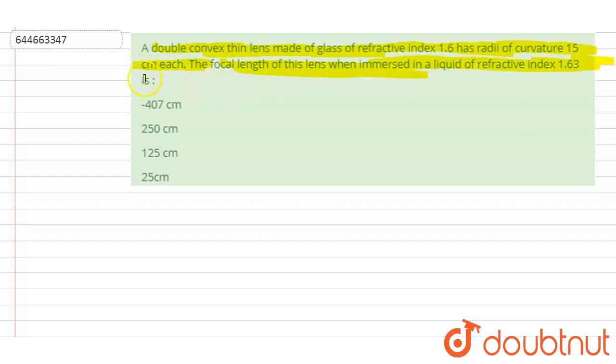So if you see, we know that 1 upon focal length equals mu relative, that is mu lens by mu medium minus 1, into 1 by radius of curvature for the first surface, 1 by radius of curvature for the second surface, from the lens maker formula.